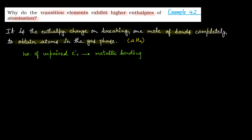और metallic bonds जो होते हैं, वो strong bonds होते हैं। तो जितने जादा bonds वहाँ पर present होंगे, उतनी ही जादा energy की requirement होगी। और इसलिए यहाँ पर इनकी जो enthalpy of atomization होती है, वो जादा होती है।